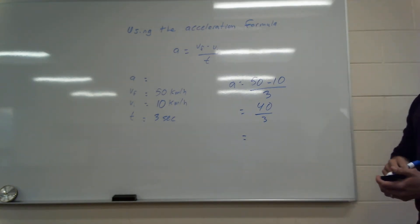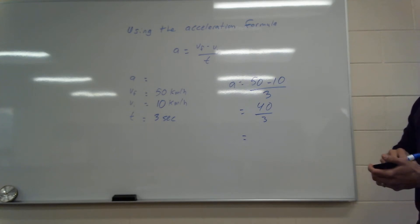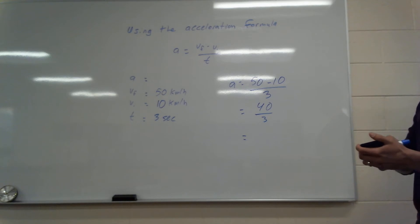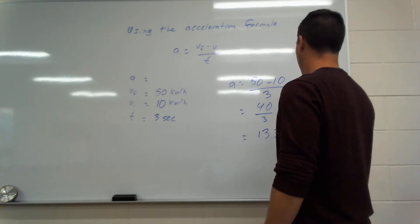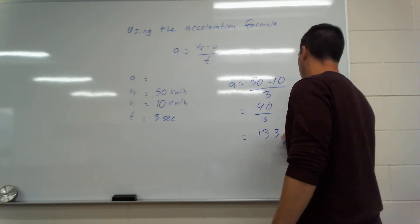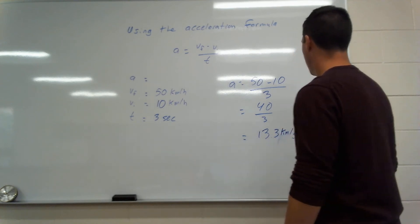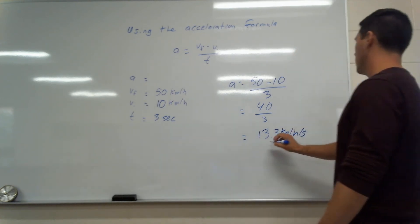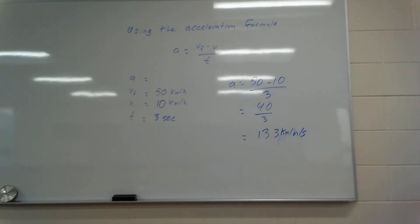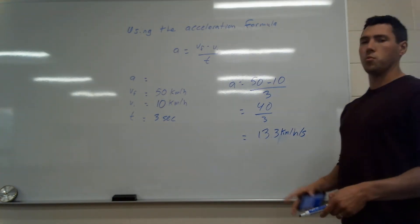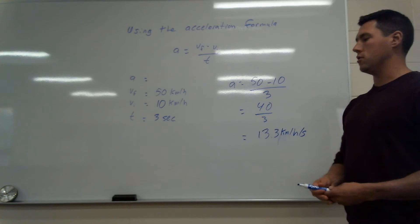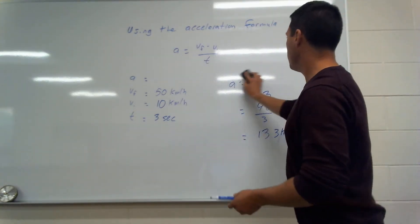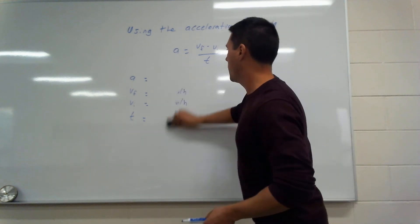Using a calculator, 40 divided by 3 gives 13.3 — so the acceleration is 13.3 kilometers per hour per second. The units are technically kilometers per hour per second; we'll refine units as we go. That's question one — no real algebra needed, it fits straight into the formula.